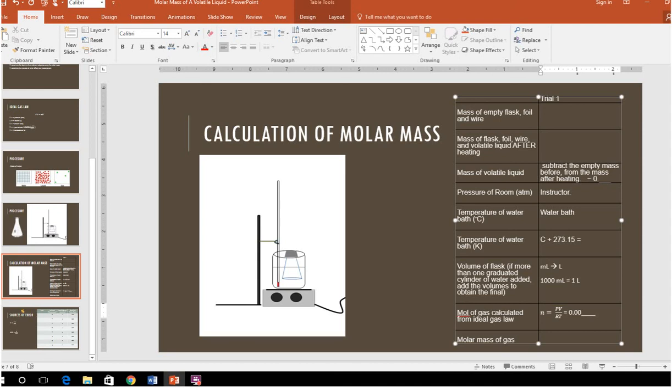Now, in order to get molar mass, you have the grams of the vapor by looking at the mass of that volatile liquid up here, and you have the moles here. So to find molar mass, you're just going to take grams divided by moles, and that's going to give you your molar mass measurement here.